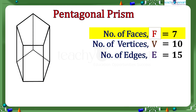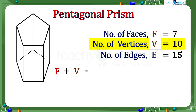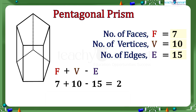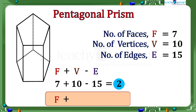Now add the number of faces and the number of vertices, then subtract the number of edges. Substituting the values we get 7 plus 10 minus 15, which equals 2. Here the answer is again 2, that is F plus V minus E equals 2.